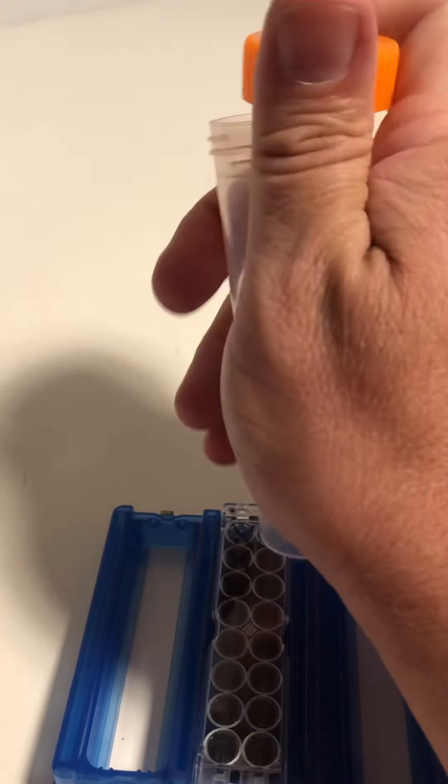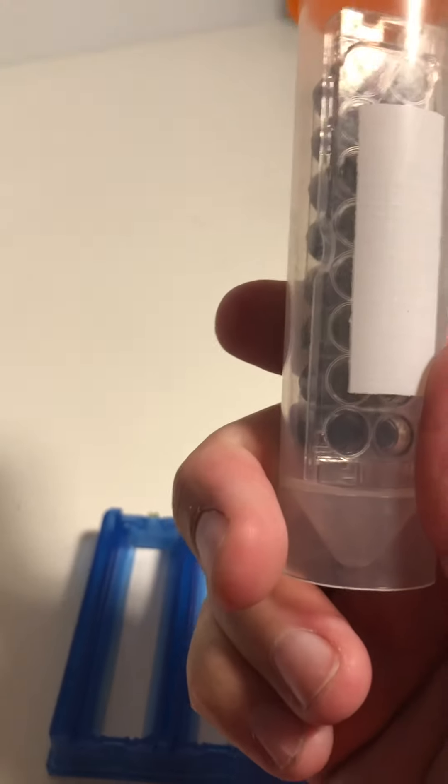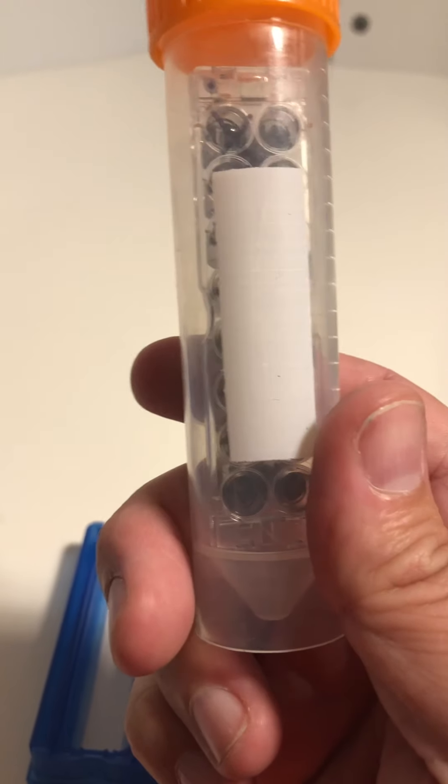All right. So while I'm still in the hood, I'm going to open up my 50 ml conical tube and I'm going to drop the strip in there and seal it up while it is in the hood. There you have it. Now it will stay sterile until you need it again.